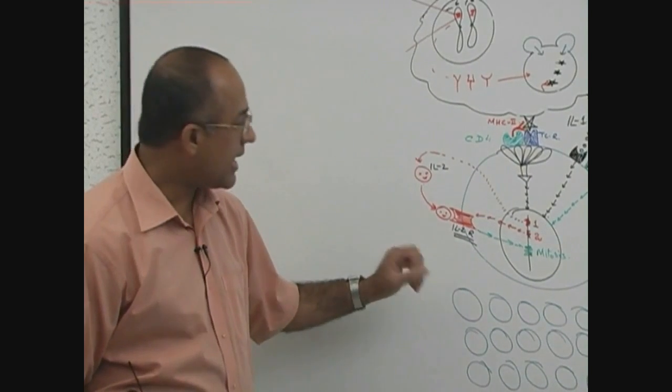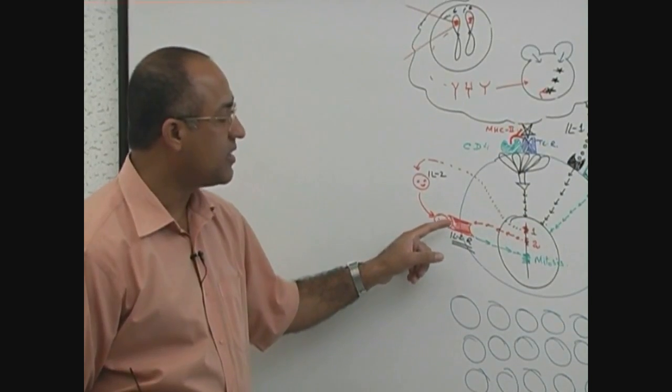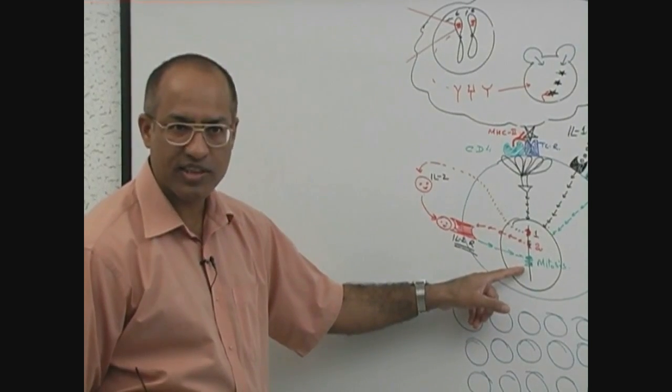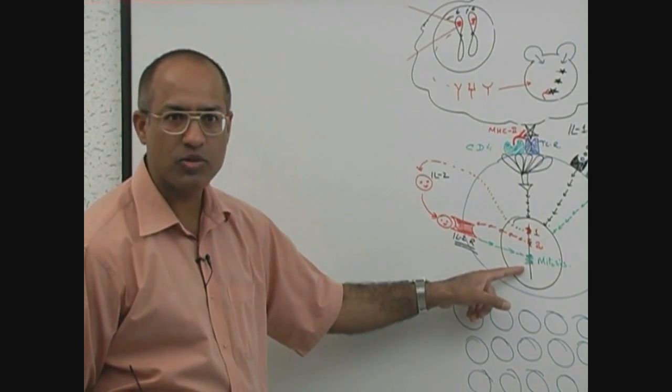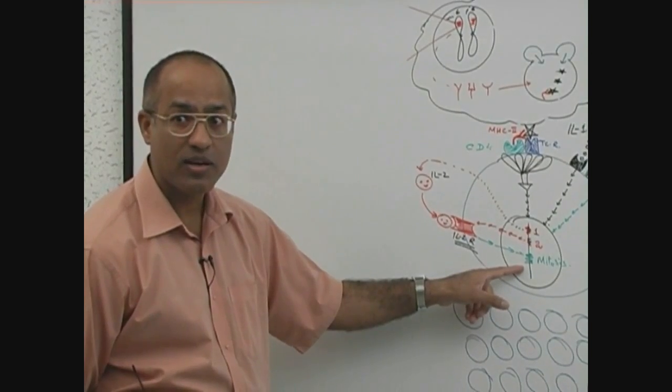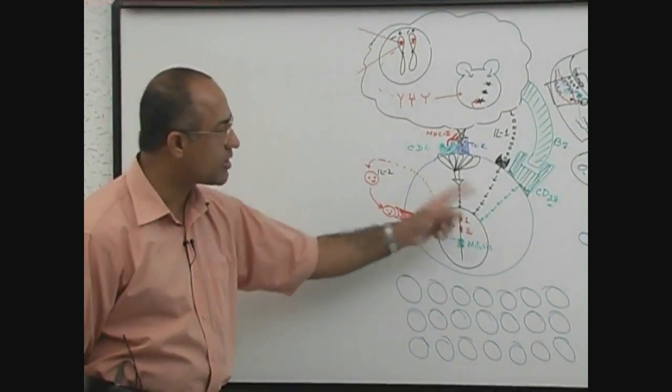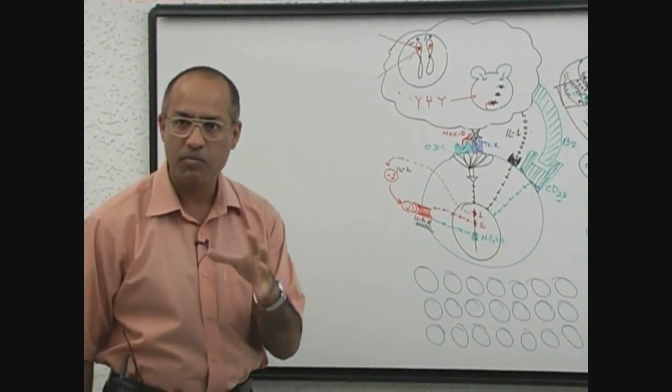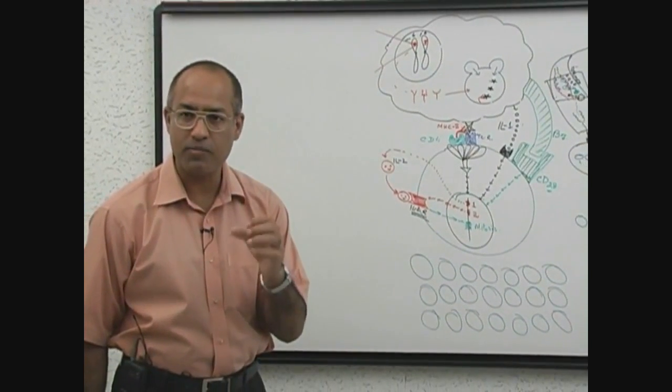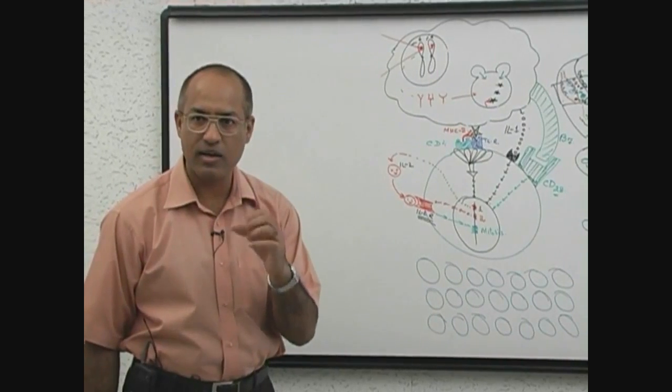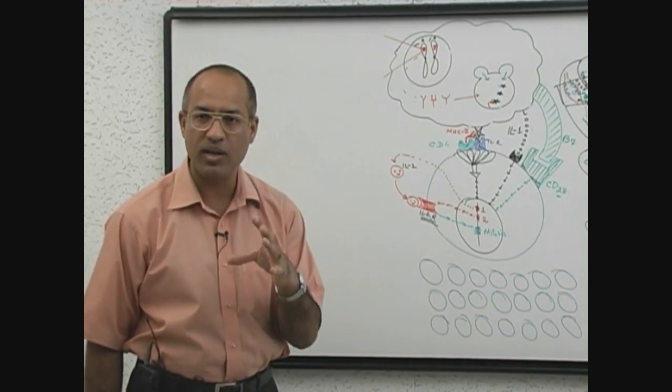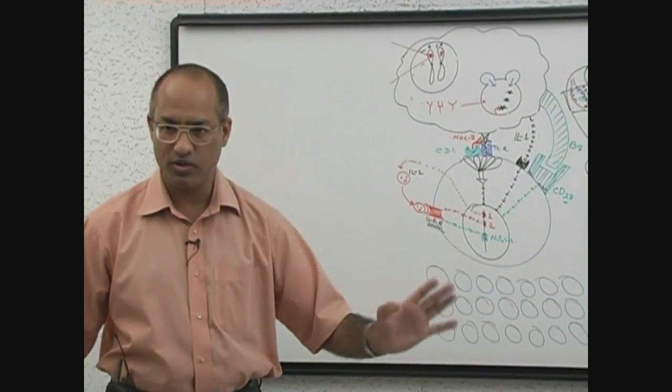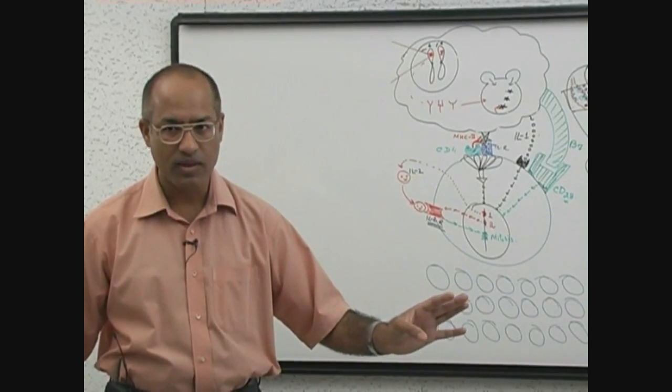When interleukin-2 receptors are activated by the interleukin-2 molecules, they give signals back to the nucleus to activate the genes which orchestrate the process of mitosis. This particular lymphocyte which was previously selected now undergoes proliferation. It undergoes repeated mitosis, and in this way, this lymphocyte due to mitotic divisions has an expanded clone.